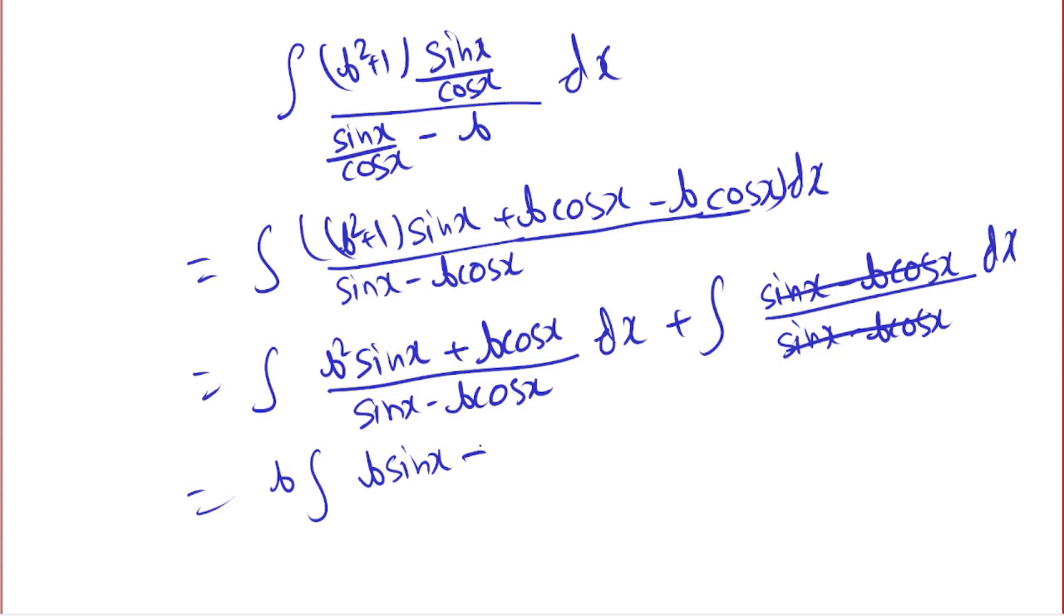Sine x plus cos x over sine x minus b cos x and dx, and this is one, so its integration will be x plus c. Okay, now if we look at this b sine x plus cos x, this is actually a differentiation of this sine x minus b cos x.